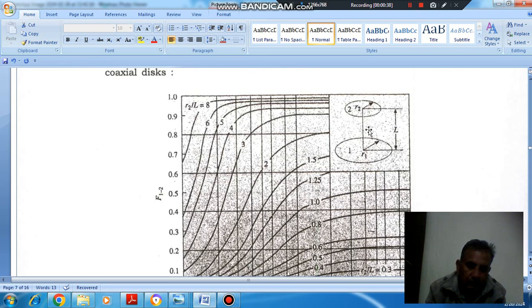So these are the two discs. The bottom disc is having radius R1 and the top disc is having radius R2. L is the length between or coaxial distance between them.